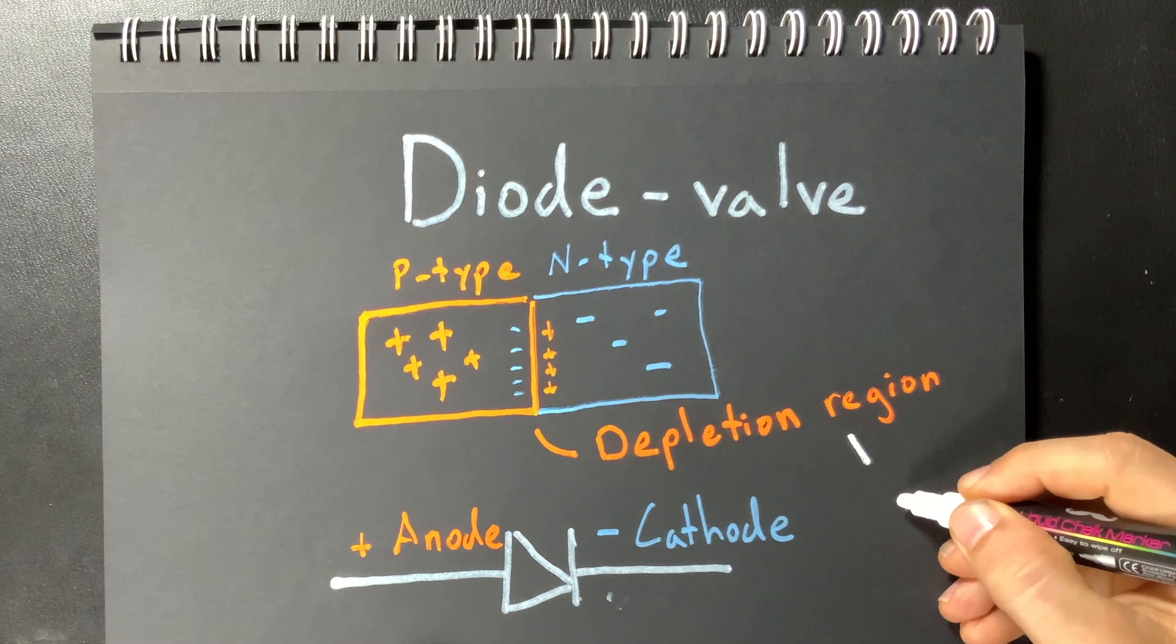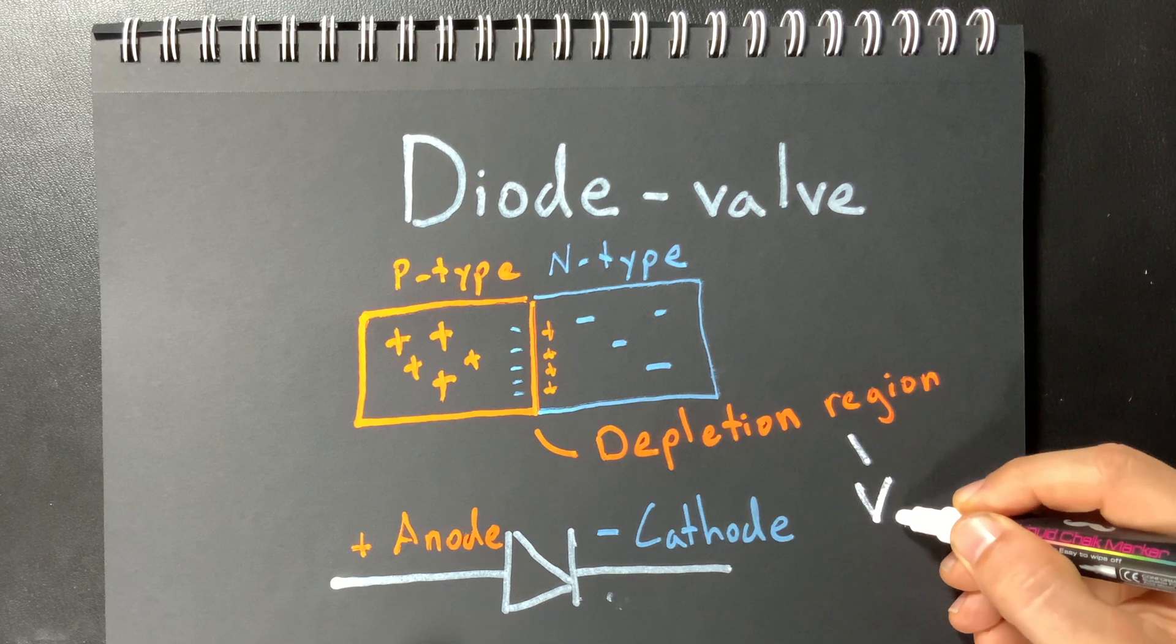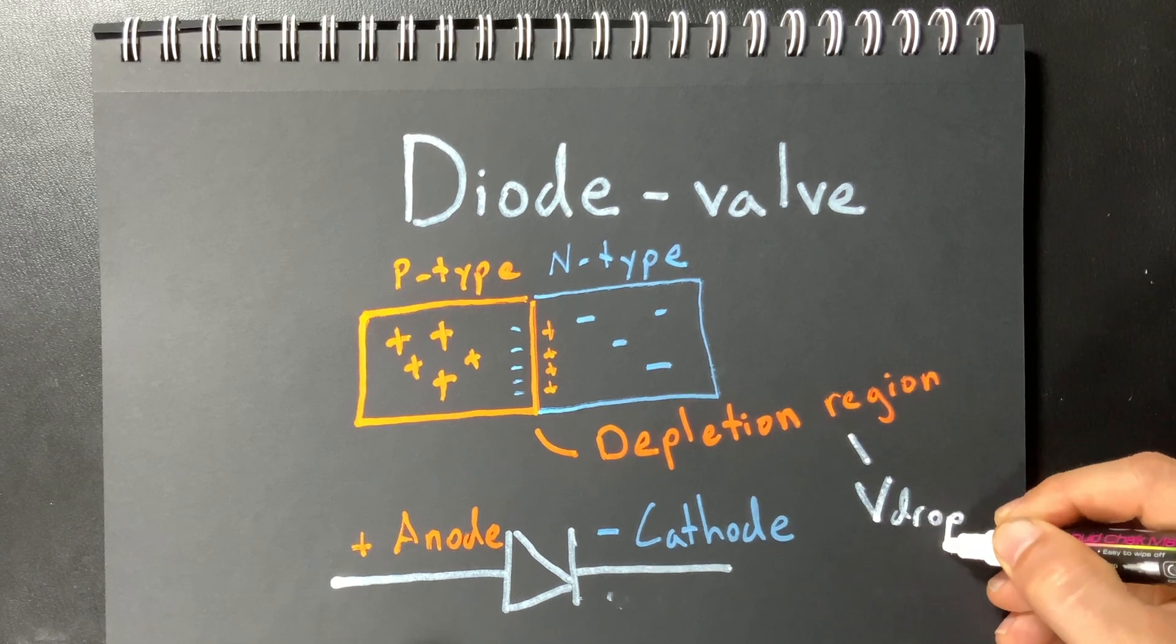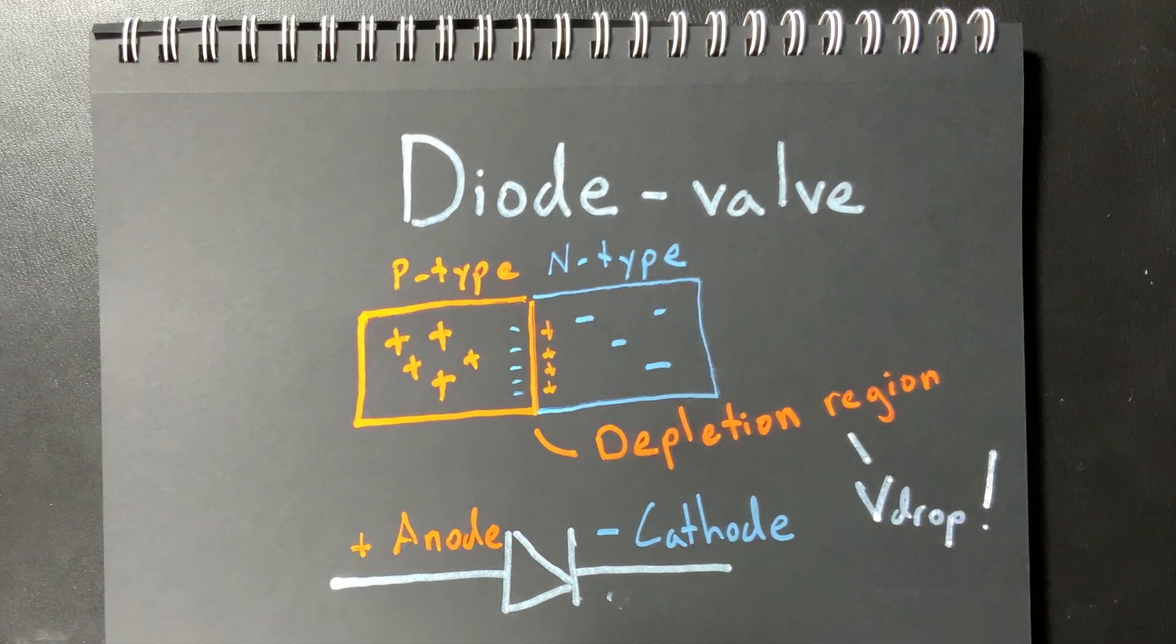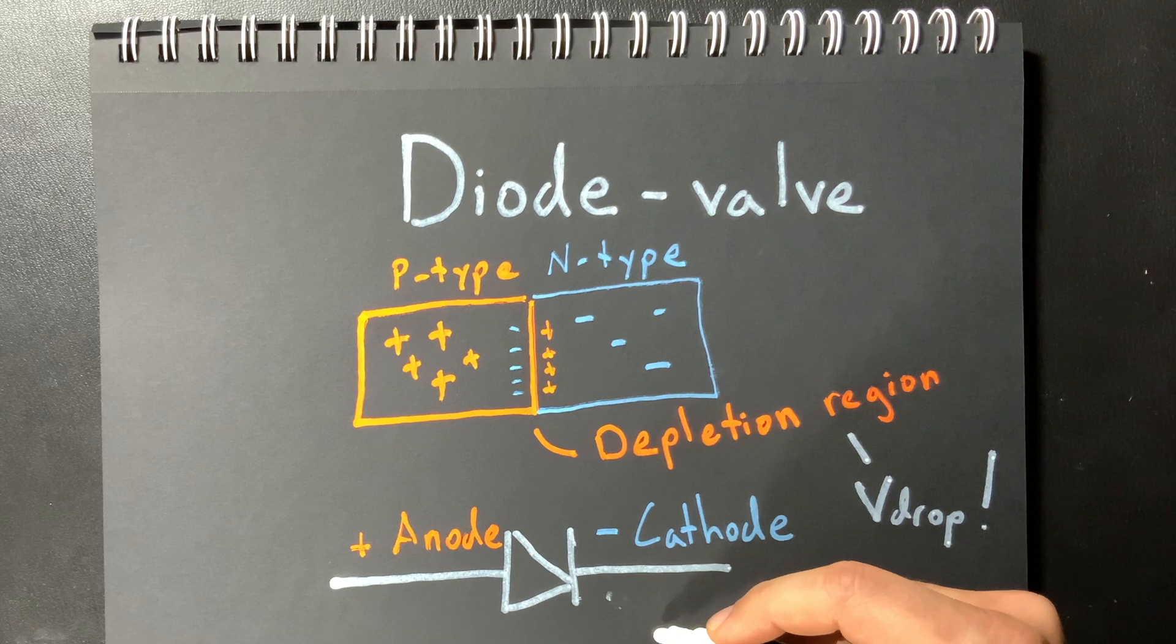So let's get back to this idea of a depletion region. What does that practically mean? Well it means there's some voltage drop, some voltage barrier that has to occur across this depletion region. Well okay maybe I can measure something that has to do with voltage. Maybe.